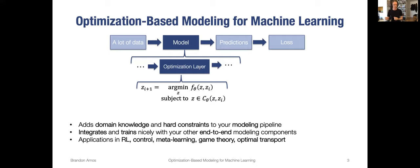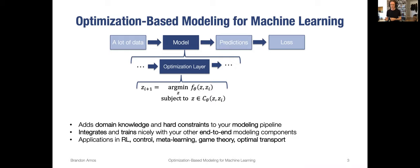This is different from how we traditionally think about optimization in machine learning, where you might typically use optimization to find the best set of parameters to optimize your loss function. Instead, I'm suggesting we use optimization as a layer inside the model, as a way of adding domain knowledge that can capture hard constraints, and that can integrate and train nicely with the other components in your end-to-end learning system. In this talk, I'll show how these layers have applications in reinforcement learning, control, meta learning, game theory, and optimal transport.